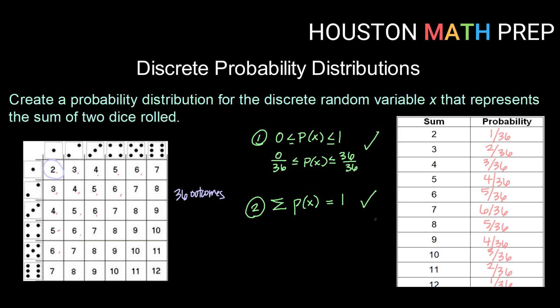So here is our completed discrete probability distribution for the sum of two dice rolled. All right, guys. That does it for this video. We'll catch you in a future one.